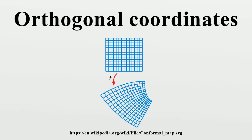Orthogonal coordinates never have off-diagonal terms in their metric tensor. In other words, the infinitesimal squared distance ds² can always be written as a scaled sum of the squared infinitesimal coordinate displacements, where d is the dimension and the scaling functions equal the square roots of the diagonal components of the metric tensor, or the lengths of the local basis vectors. These scaling functions are used to calculate differential operators in the new coordinates, e.g., the gradient, the Laplacian, the divergence, and the curl.